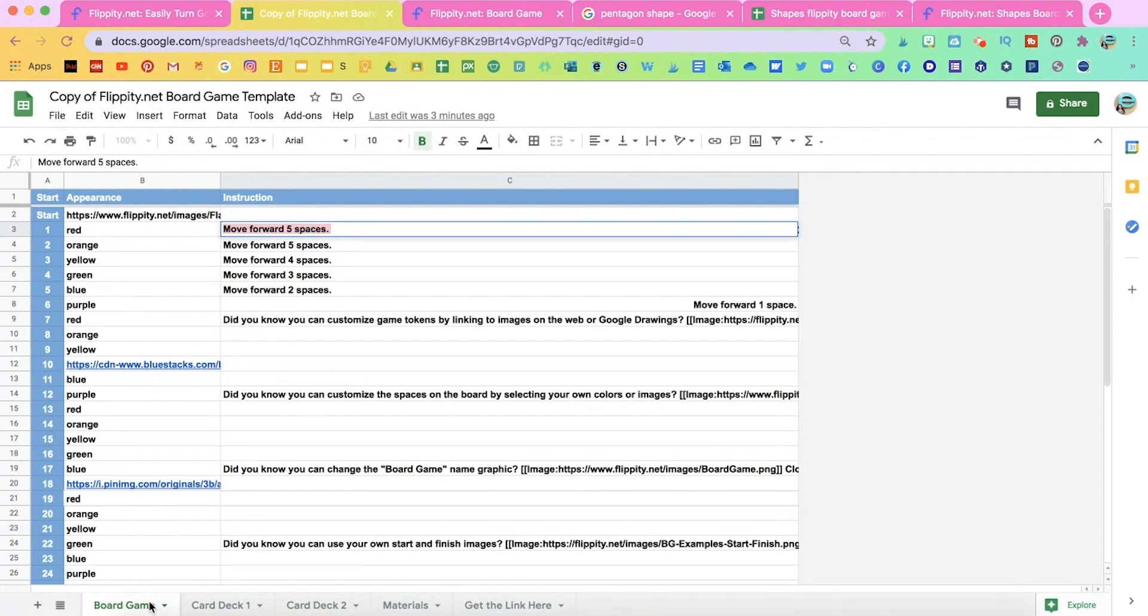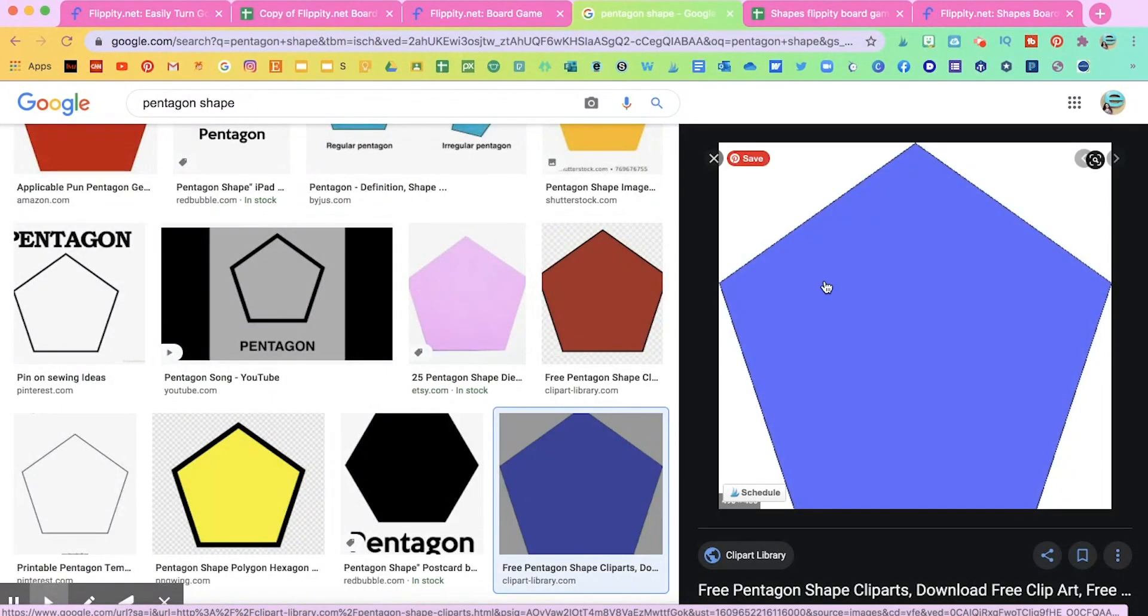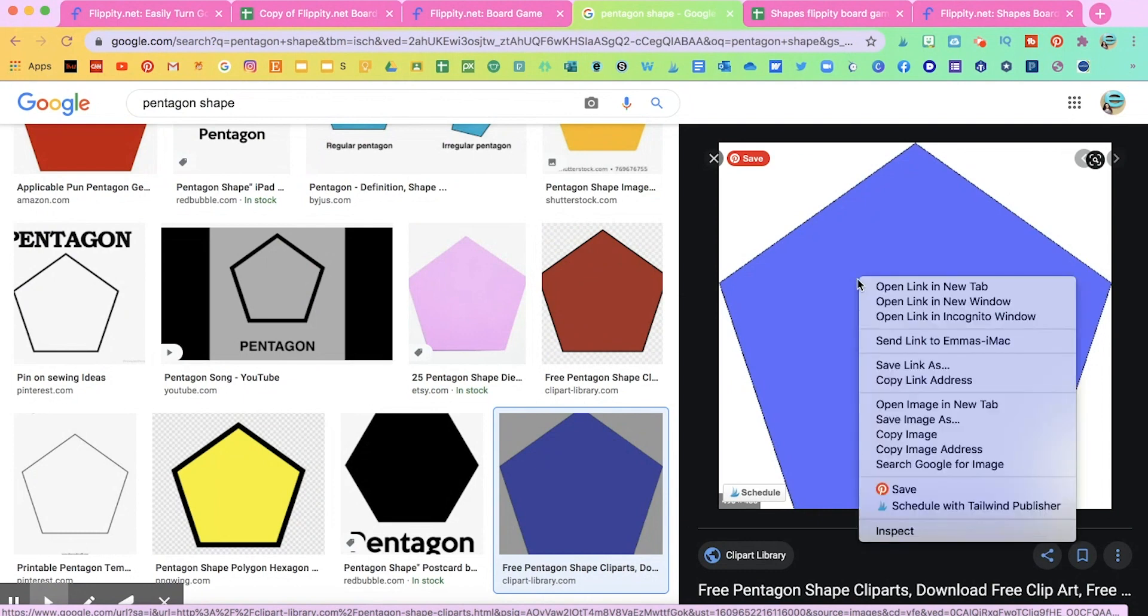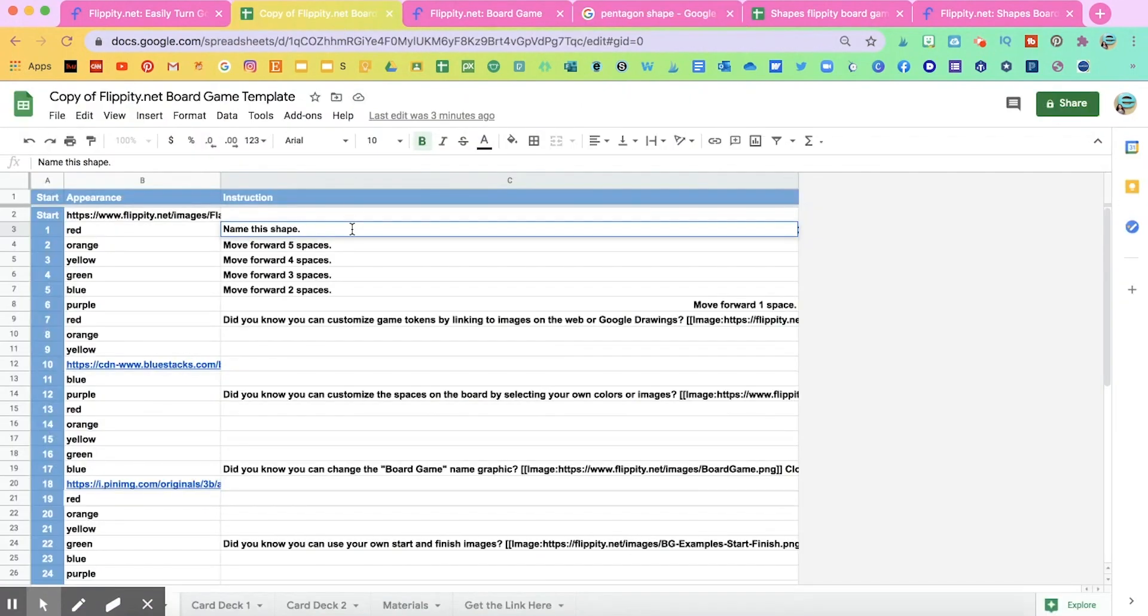Let's just say I'm reviewing shapes. I'll say something like I'm going to change it to say name this shape. And I want to add a visual. So what I'm going to do is go back to Google and I want to choose this pentagon. Click on it. Remember, right click and then go down to copy image address. Copy that.